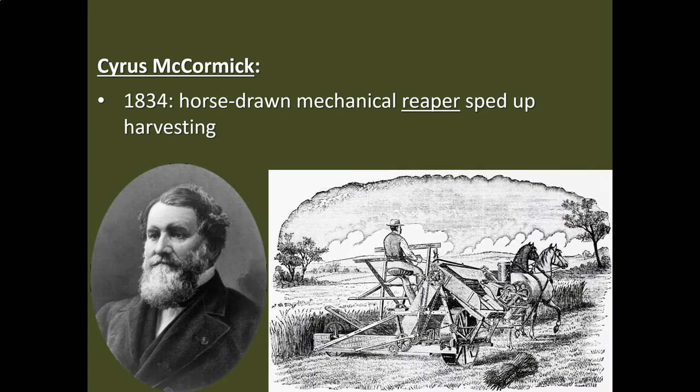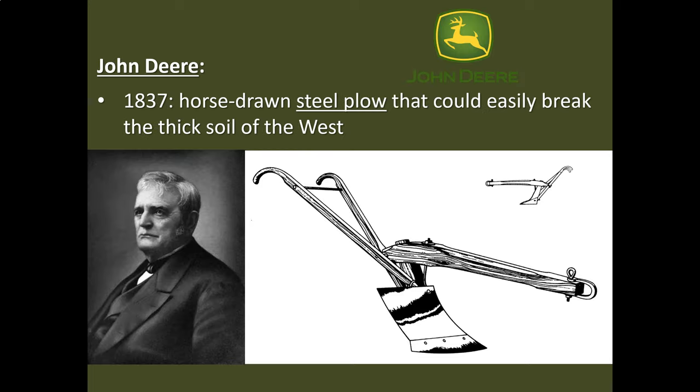Our next innovation is going to come from a guy named Cyrus McCormick. In 1834, he comes up with the Mechanical Reaper. What this is going to do is greatly increase the speed of harvesting, allowing one person to do the job of many, and getting that harvest in more quickly. Specialization is going to be the key when it comes to industry.